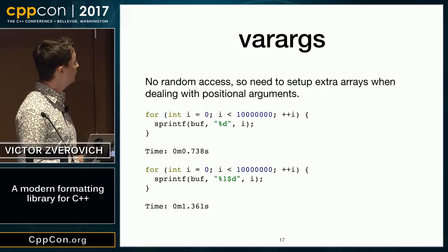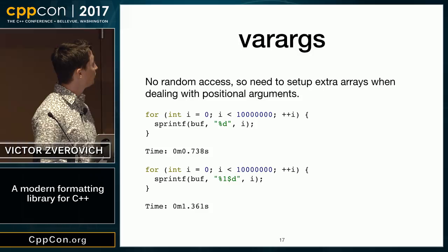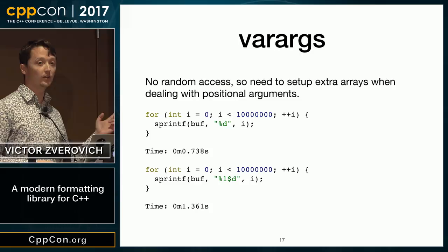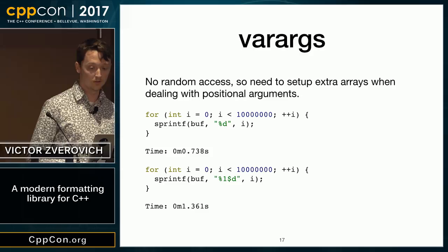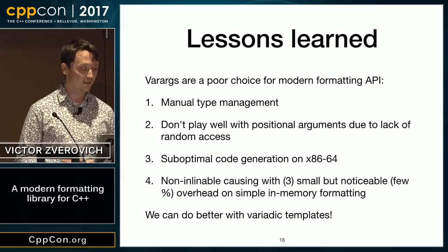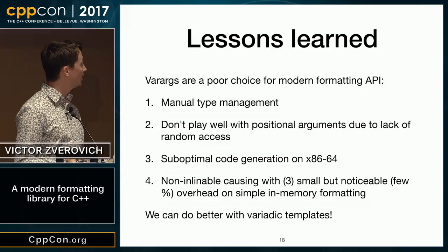A more serious problem is a lack of random access. If you use positional arguments, you'll need to set up extra arrays, and printf does a bunch of other stuff, so on my platform — macOS with Clang — if you use positional arguments with sprintf, it can be almost two times slower, which is crazy. Varargs is a poor choice for a modern formatting API because of manual type management, they don't play well with positional arguments due to lack of random access, we have sub-optimal code generation, and the functions are non-inlineable. We can do much better with variadic templates.